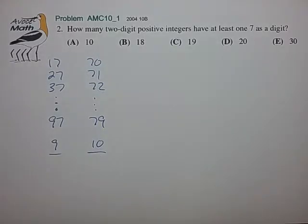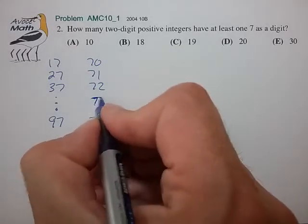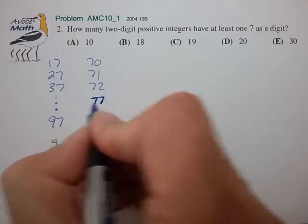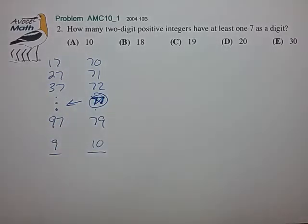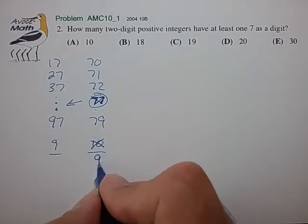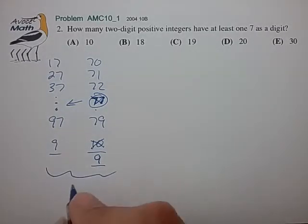But we have to recognize that in the second list we're counting 77 and that number was already counted from our first list. So we don't want to double count that so we have to eliminate that from our second count and adjust our count down by 1 to give a total value of 18 two-digit numbers that have at least one 7 as a digit for choice B.